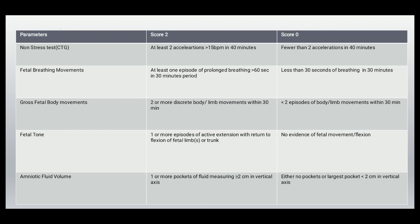For amniotic fluid volume: score is 2 if there is one or more pockets of fluid measuring more than two centimeters in the vertical axis; score is 0 if there is no pocket, or if the largest pocket is less than two centimeters in the vertical axis.